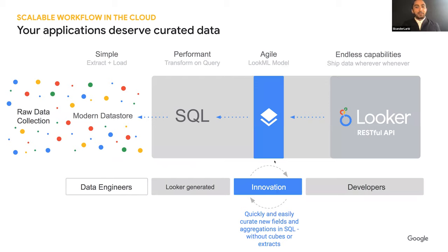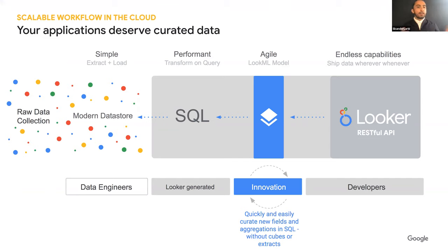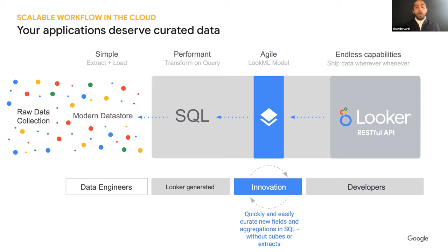What you see on the left - all those dots - this is really data collected by companies when you make a transaction or purchase. On the left side you have huge amounts of databases: Snowflake, BigQuery, MySQL, Postgres, SQL Server, Oracle, and others. What Looker does is create a product where developers can ask questions to the data without knowing SQL. The RESTful API from Looker goes into the database, collects the data, turns it into information, and returns it as JSON. Looker is really an API plus a metadata layer that can ask questions to the data.